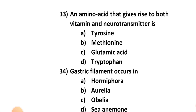Question number thirty-three: An amino acid that gives rise to both a vitamin and a neurotransmitter is — tyrosine, methionine, glutamic acid, or tryptophan? It is tryptophan.